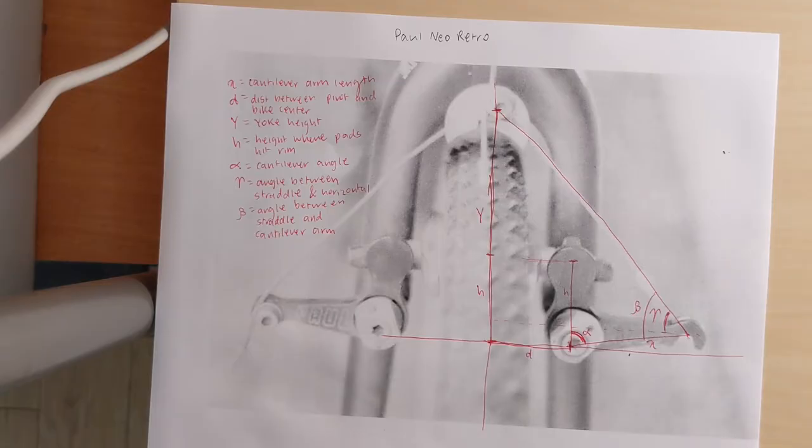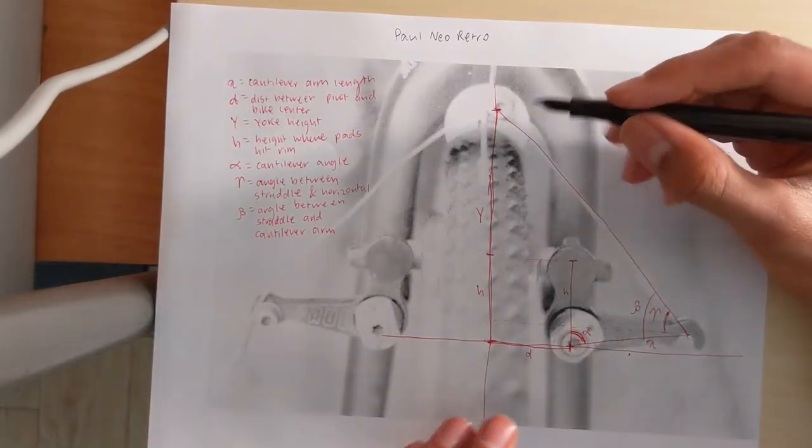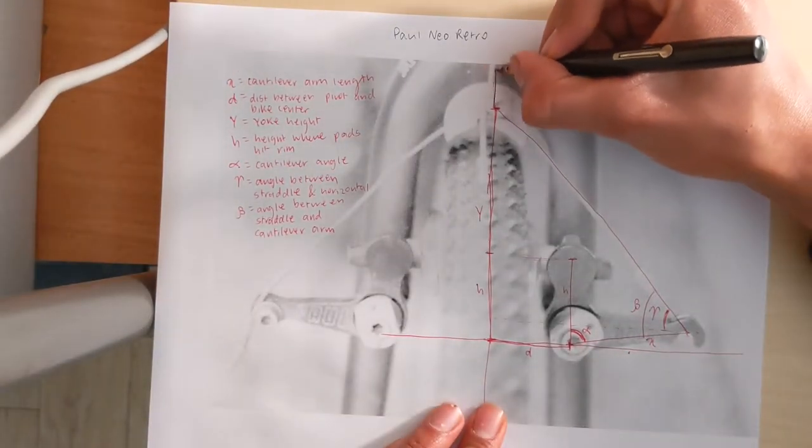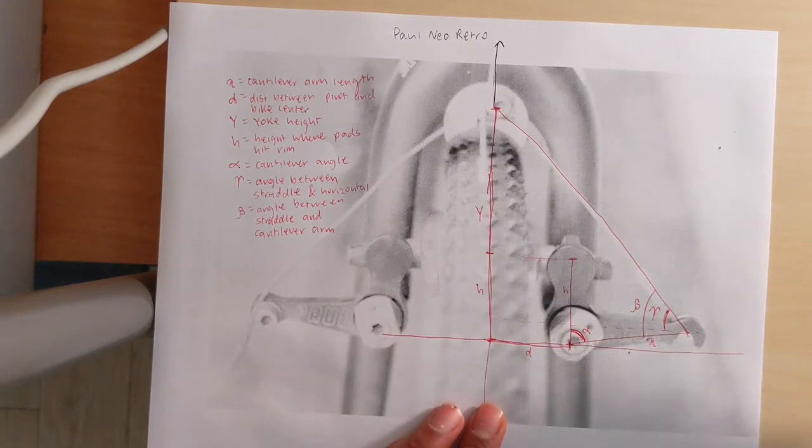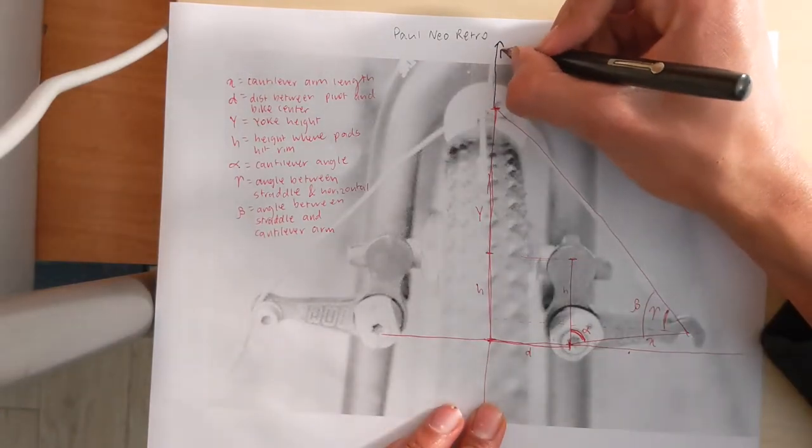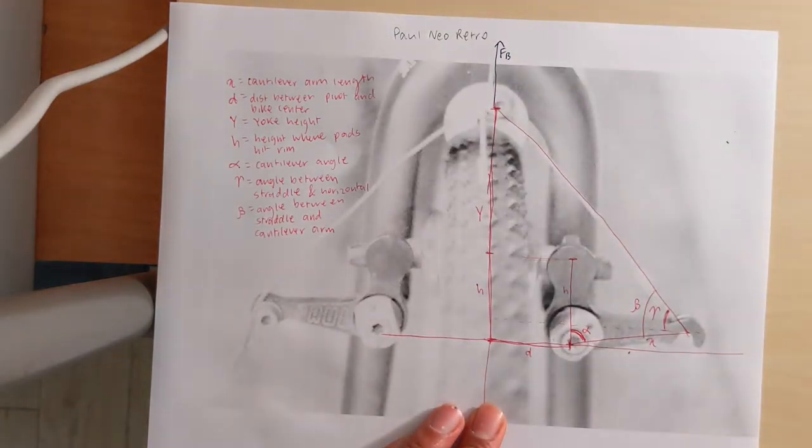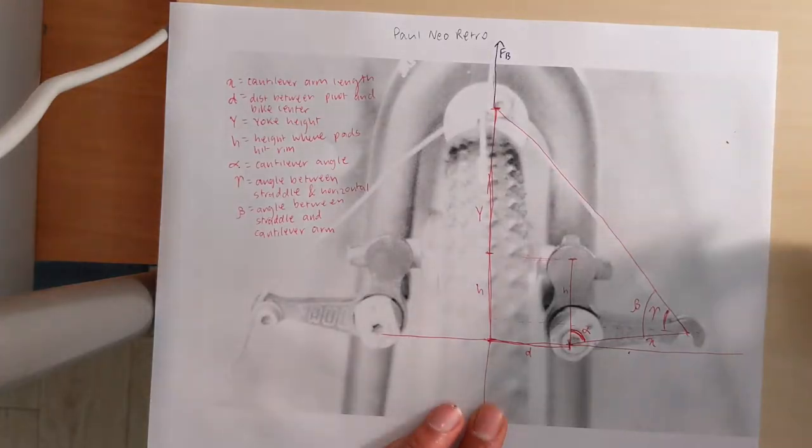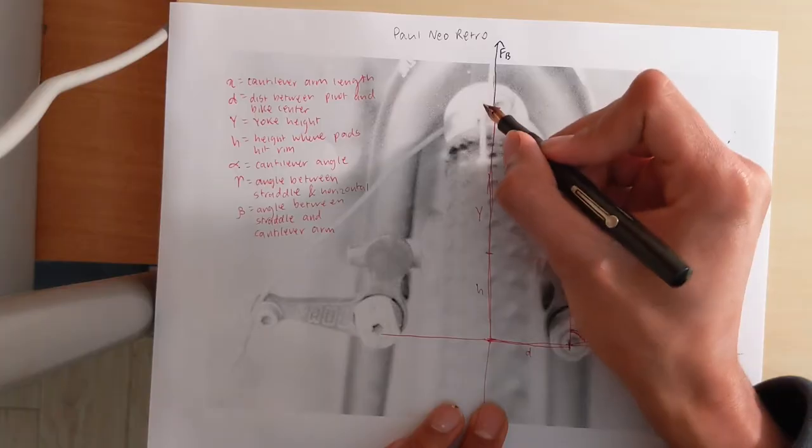All right, let's do some force equilibriums now. I'm going to draw these in blue pen. This is the original main force. This is Fb, which is the force exerted by your braking wire. Fb gets split into two components.